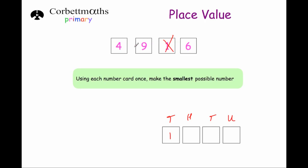Now let's think of the other digits: 4, 9 and 6. For the hundreds column, we've got a choice between 400, 900 or 600. We'll put 400 in there because that gives us the smallest possible number, so we've got 1,400. Now I've got a choice between a 9 and a 6 for the tens column. We're going to put the 6 in there because 60 is smaller than 90. And for the units, we'll put the 9 in there. So our answer would be 1,469 — that's the smallest possible number we can make with those digits.